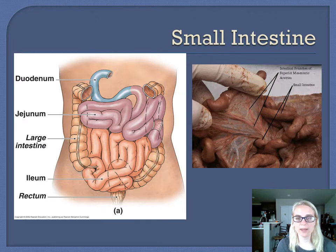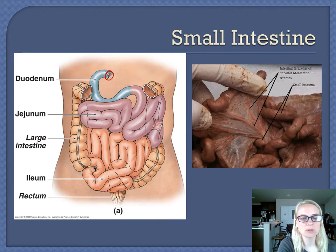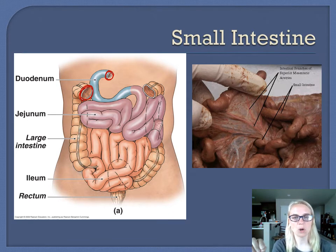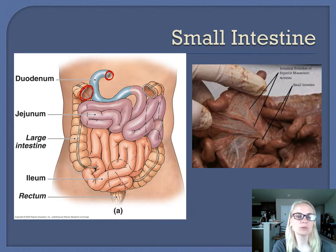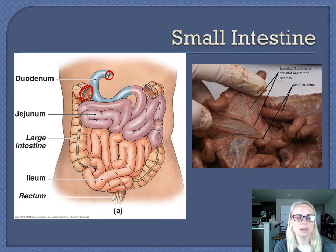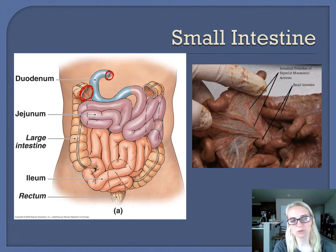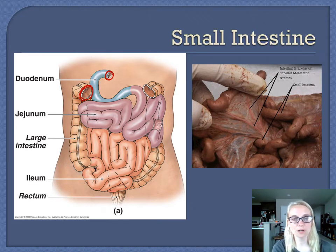Some people wonder why we call it the small intestine when it's the longest one — the name 'small' refers to the diameter of the tube. The small intestine is smaller in diameter; the large intestine is larger in diameter. As far as length goes, the small intestine is about 15 to 20 feet long, while the large intestine is about 6 feet long. That increased length helps increase surface area for nutrient absorption.